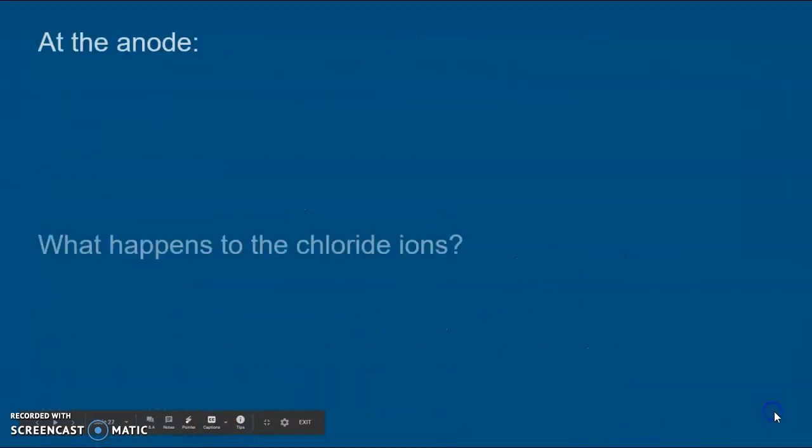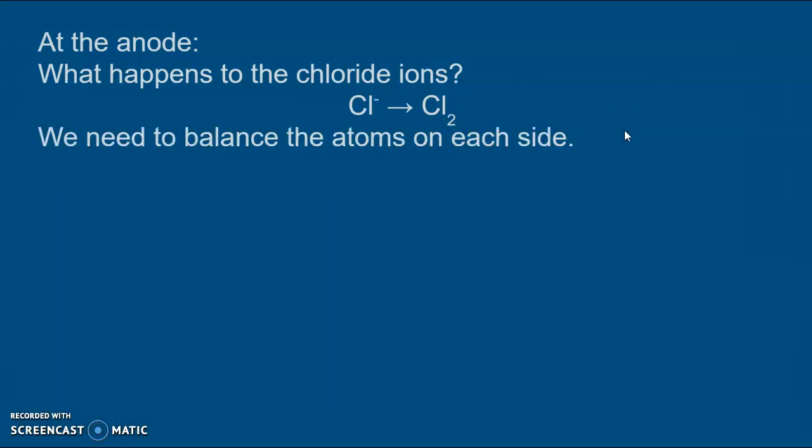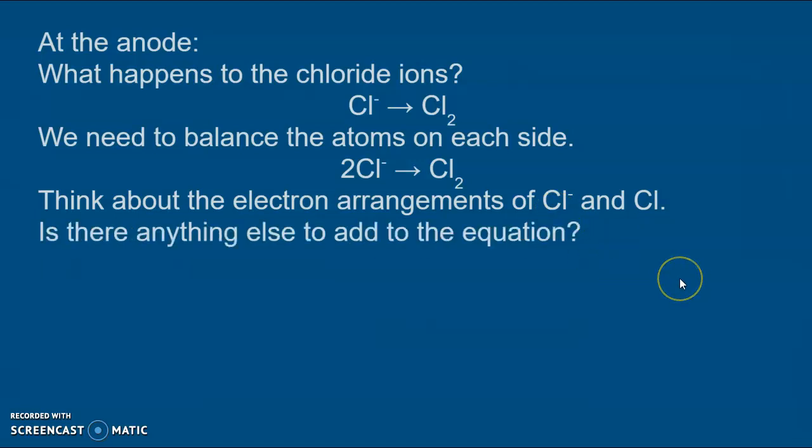Now let's take a look at what happens at the anode in a little bit more detail. What happens to the chloride ions? Well we should know that chloride ions become chlorine molecules. So we need to balance the atoms on each side. We need two chloride ions to get a chlorine molecule. And again if you think about the electron arrangements. Chlorine is 2,8,7 and a chloride ion is 2,8,8. Anything else to add to the equation? Yes of course there are electrons again.